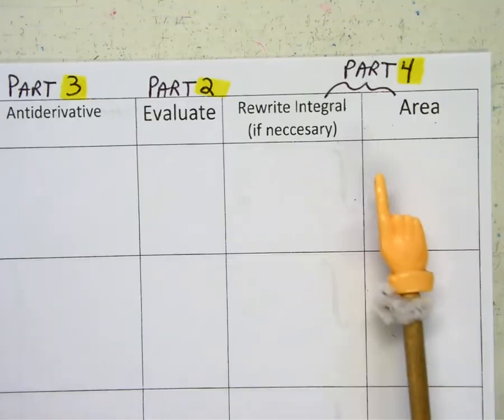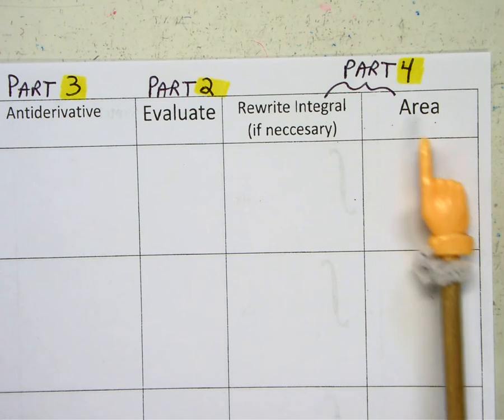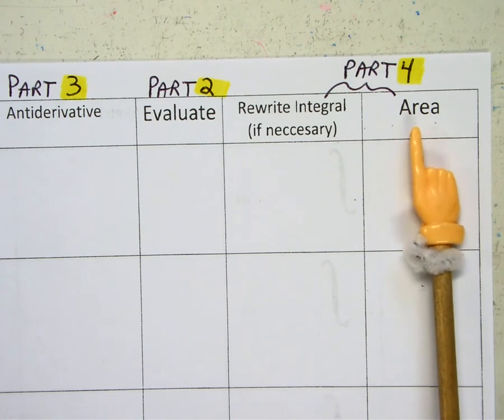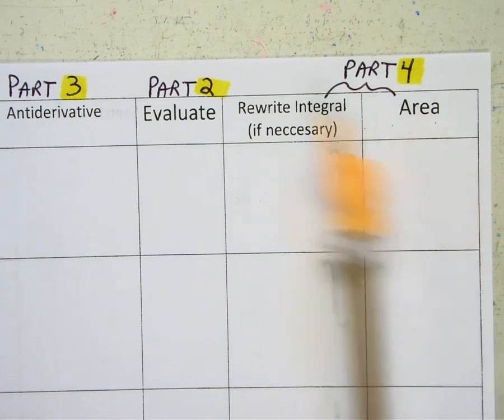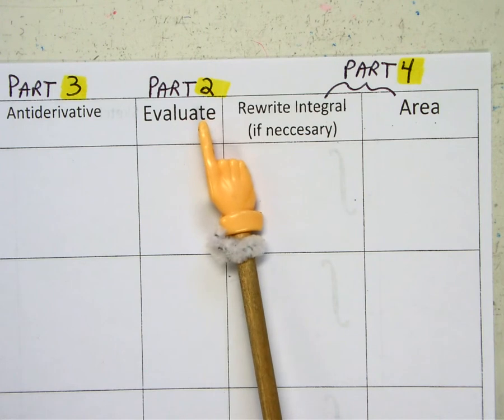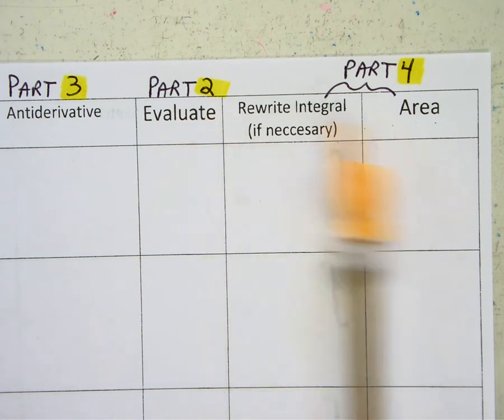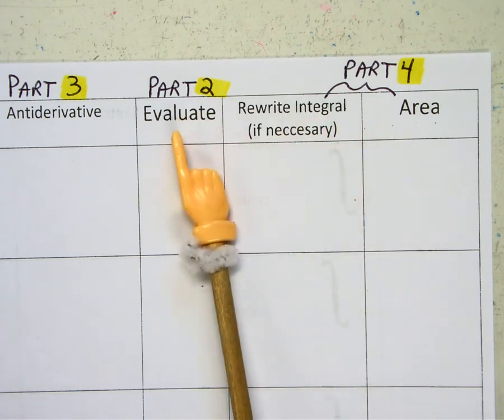Part four is I'm going to show you how to find the area of an integral. Now, the area may be a different numerical answer than evaluate. So that's two different concepts. You have to pay attention to the directions given in the problem.